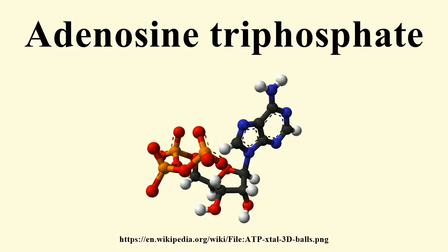Apart from its roles in signaling and energy metabolism, ATP is also incorporated into nucleic acids by polymerases in the process of transcription. ATP is the neurotransmitter believed to signal the sense of taste. The structure of this molecule consists of a purine base attached by the 9-nitrogen atom to the 1-carbon atom of a pentose sugar, with three phosphate groups attached at the 5-carbon atom of the pentose sugar.